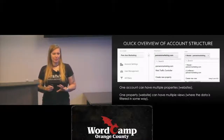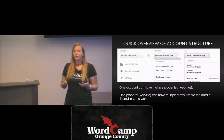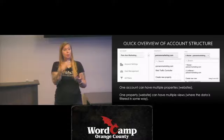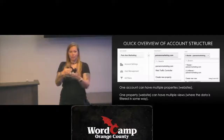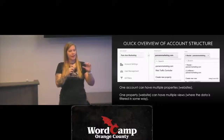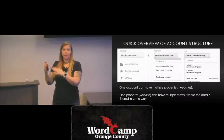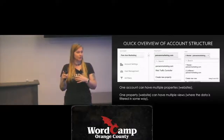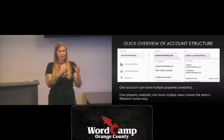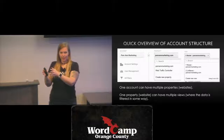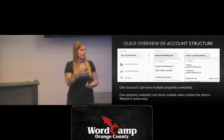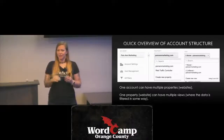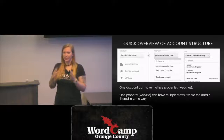Before we dive in, I want to touch upon account, property, and view, because I'll be mentioning these. In Google Analytics, you can have a single account that has multiple properties, which are typically used for multiple websites. One login can track multiple websites, also known as properties. And each website can have multiple views where the data is filtered in a variety of ways. It's always a good practice to have one completely unfiltered view for each website. If you go into the admin section, you'll see those three columns: account, property, and view.